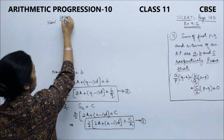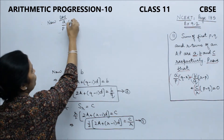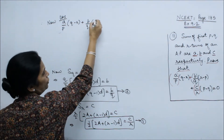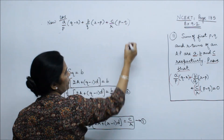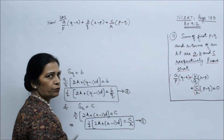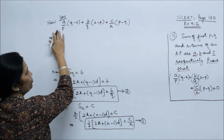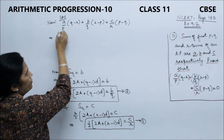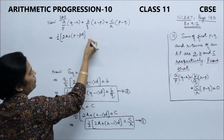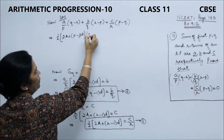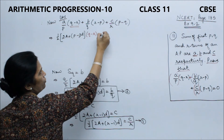LHS: A/P × (Q−R) + B/Q × (R−P) + C/R × (P−Q). This is the entire left-hand side. Now we substitute: A/P is replaced by half × (2A + (P−1)·D), multiplied by (Q−R).